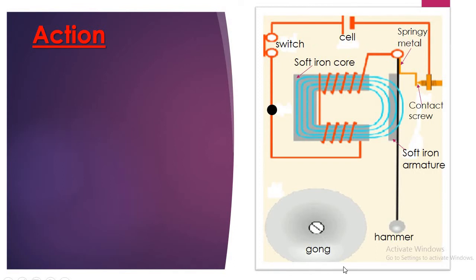It consists of a gong, a hammer, a soft iron armature on which the hammer is attached, a contact screw, and a springy metal. So, in between these two, we have a contact.